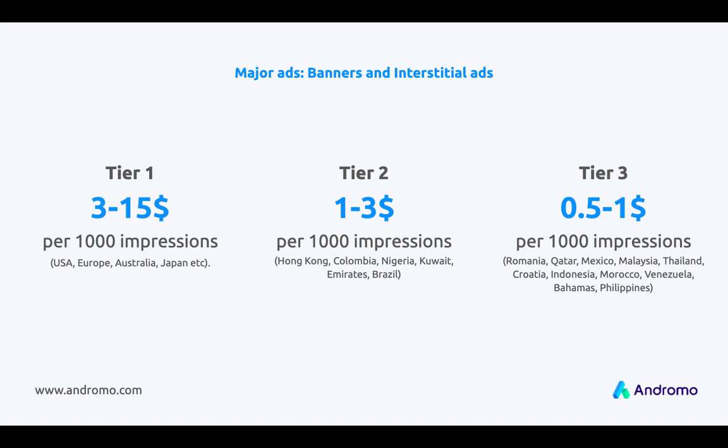There is also one important factor which influences your revenue: the geography of your app users. Advertisers pay more for users from countries with strong economies and less for users from developing countries. These countries are divided by tiers. If your app is used mostly in tier one countries then you will be paid between three and fifteen dollars per one thousand impressions. Tier two countries: between one and three dollars per one thousand impressions. Tier three countries: between fifty cents and one dollar per one thousand impressions.